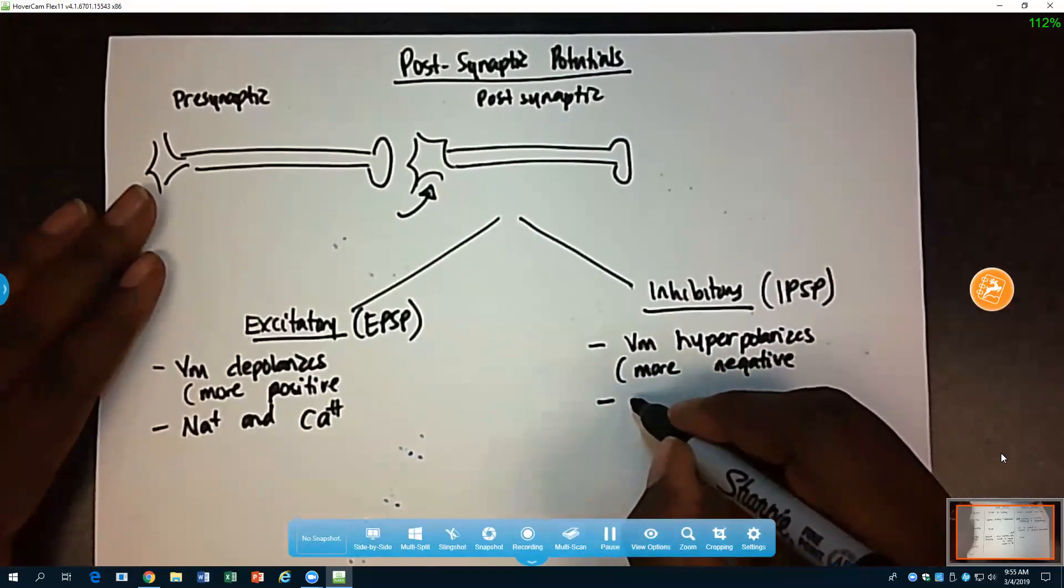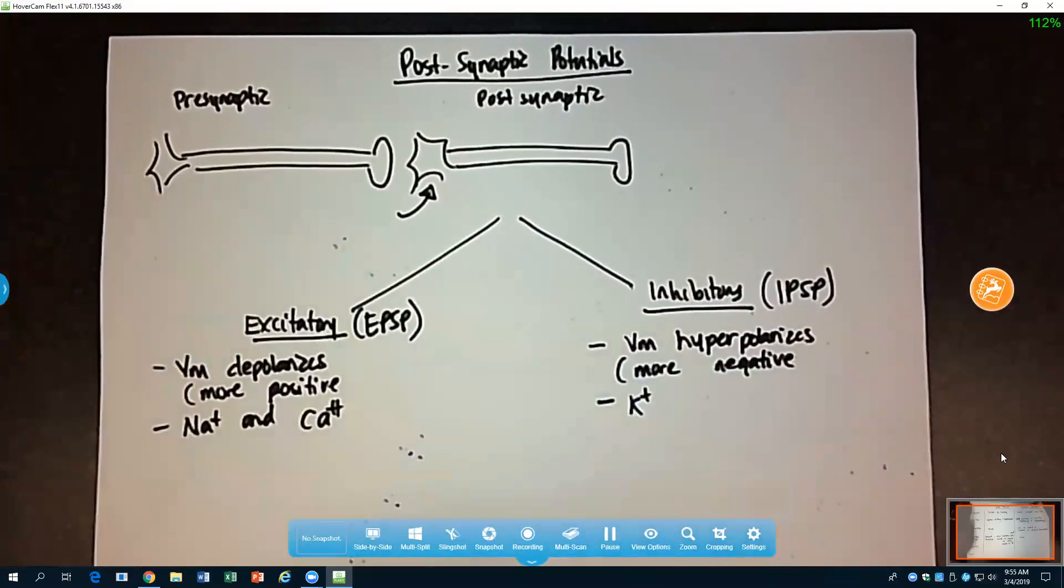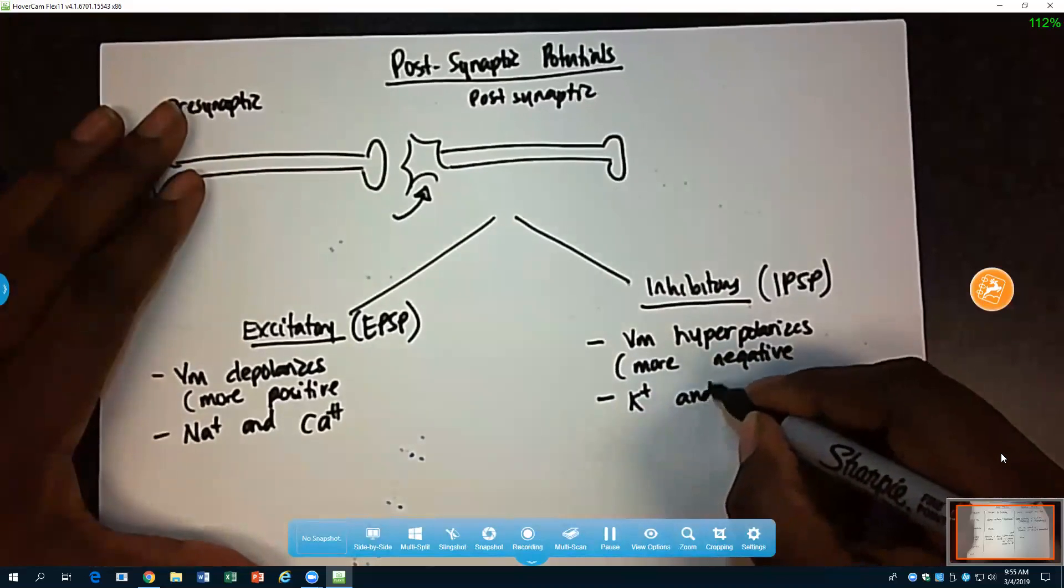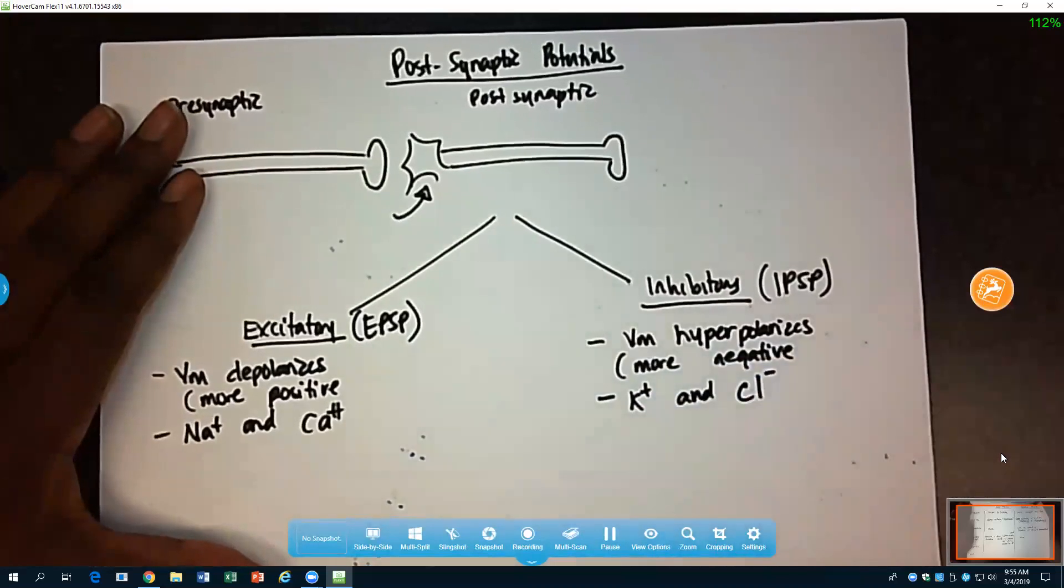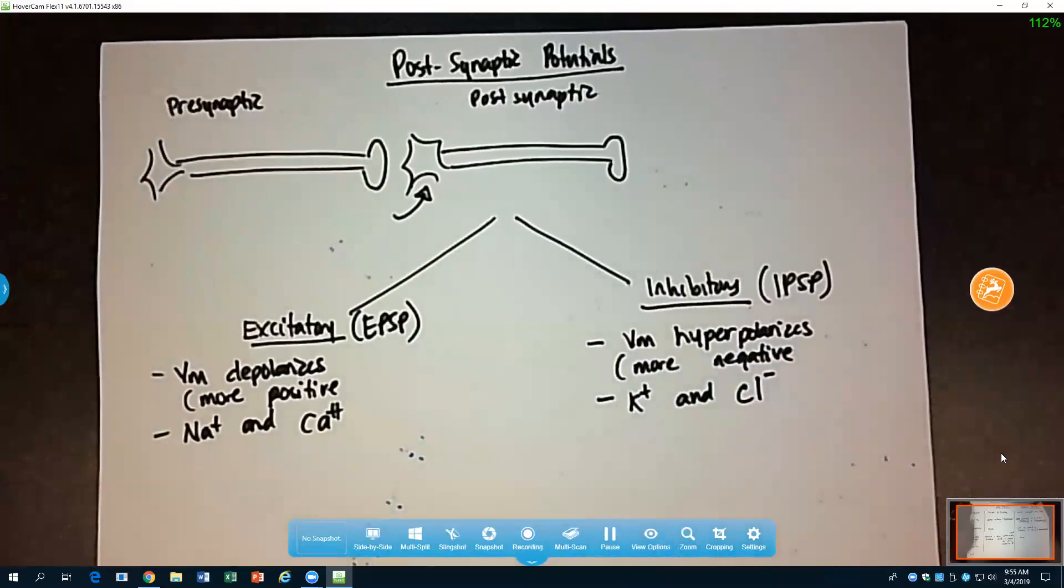So one would be potassium. If we open up potassium channels, potassium would move out and that would hyperpolarize. What was the other ion? Chloride. Chloride. Perfect. Chloride is a negatively charged ion, and if we introduce it into the cell, we hyperpolarize as well.